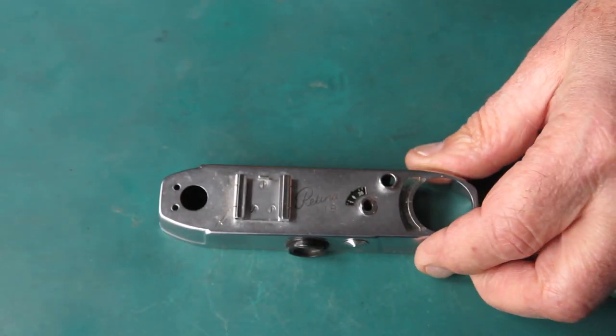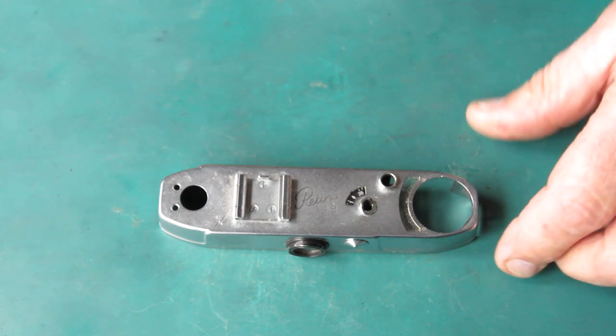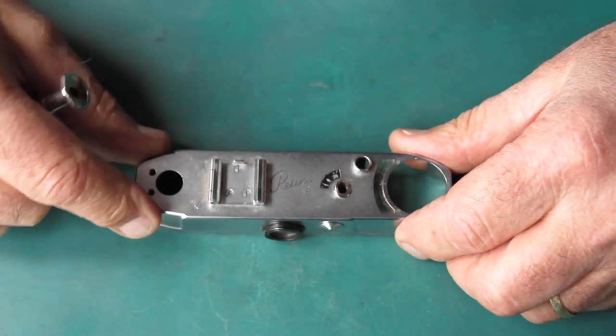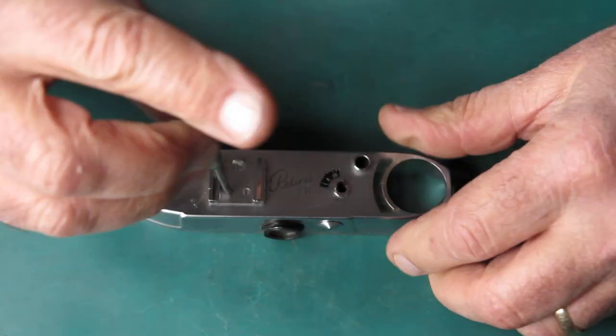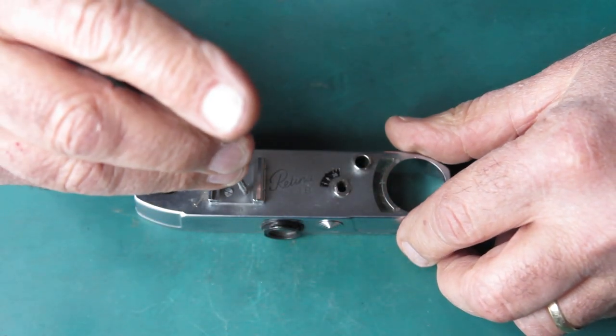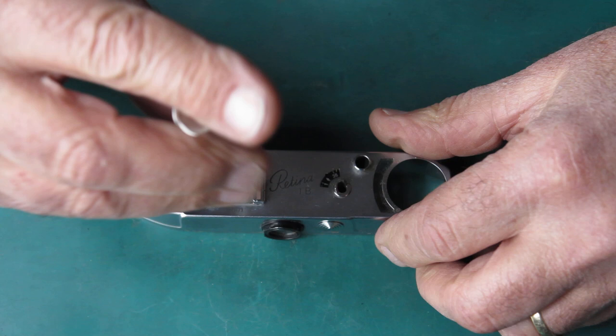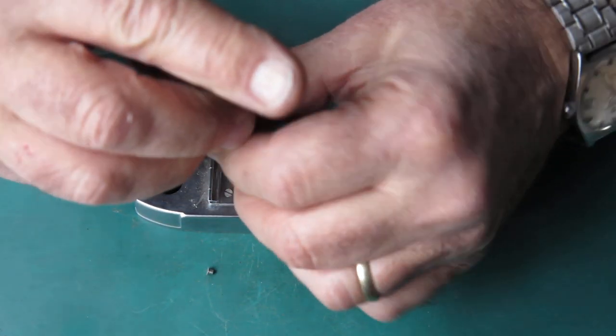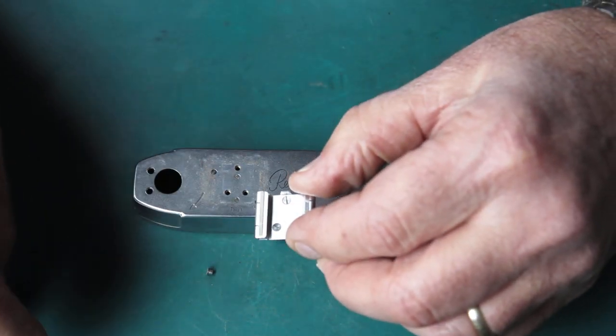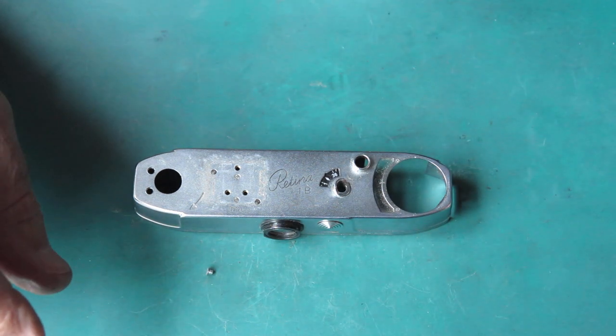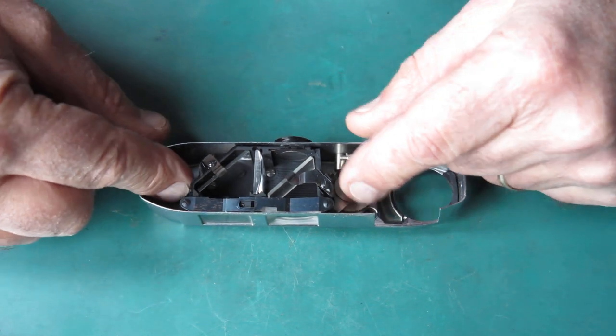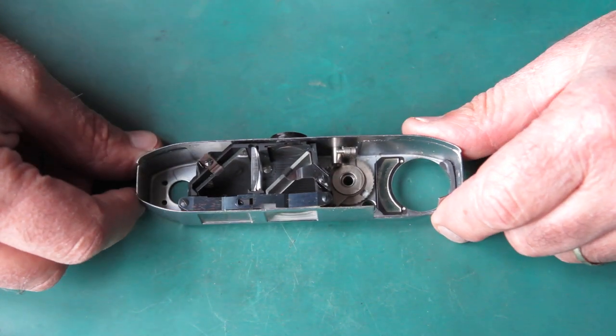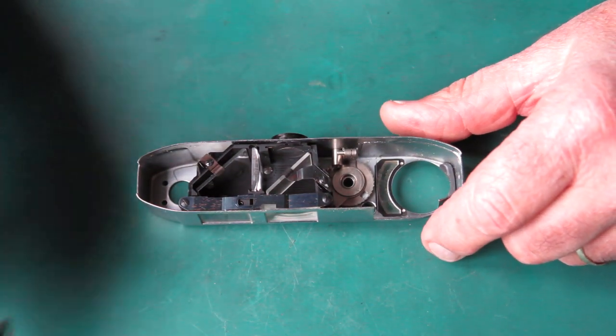Now taking this apart is quite a lot like taking apart the viewfinder of a retinette 1A. A couple of differences, but very similar process. So first I'm going to remove the shoe. Now if this was a retinette, when you remove that shoe and its screws, you'd also be unscrewing the plate. But on the retina they actually riveted that plate in place.